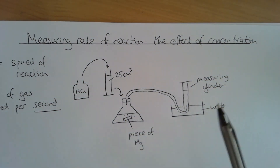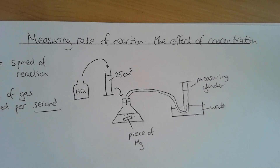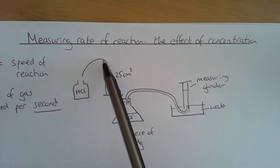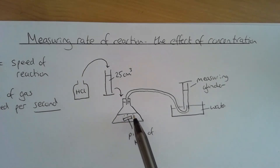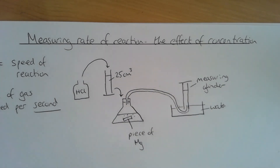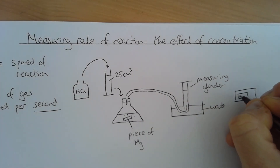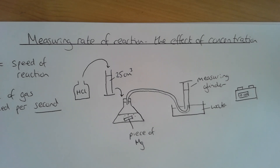So let's think about this one more time. We've got a trough or big bowl of water with a measuring cylinder that's also full of water that has a tube going into it. On the other end of the tube, we've got a conical flask with a piece of magnesium and our measured volume of hydrochloric acid. As the gas is produced, it will go through the tube and push the water out of the measuring cylinder. We will also need a stopwatch to measure the time intervals.